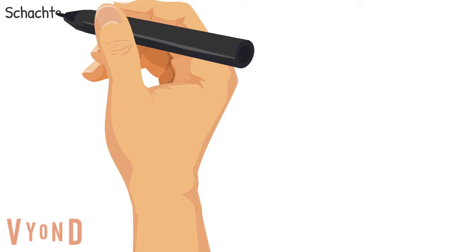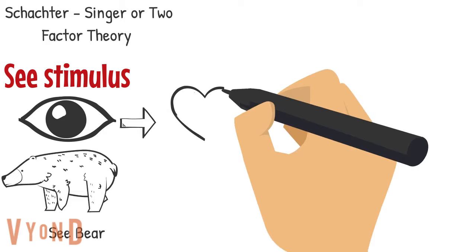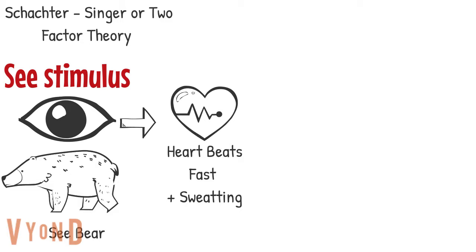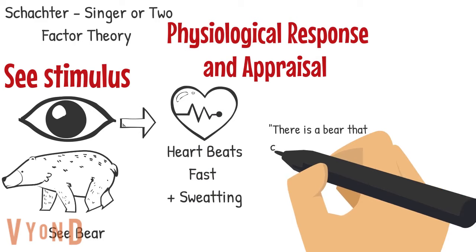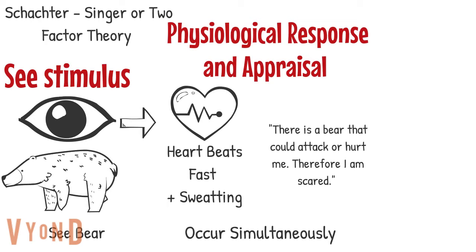The Schachter-Singer theory argues that you first see the stimulus — in your case, that would be seeing a bear at your campsite. Then you have your physiological response, so your heart starts beating fast and you start sweating. Schachter-Singer argued that at the same time as your physiological response, you would appraise the situation, which meant identifying the stimulus and understanding why it has led you to feel that emotion. So in your example, there is a bear at my campsite that could attack or hurt me, and therefore I'm scared.